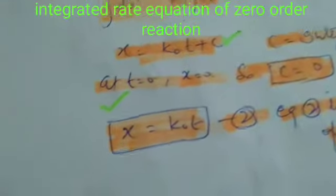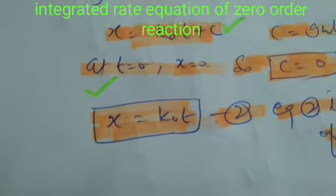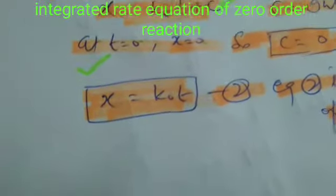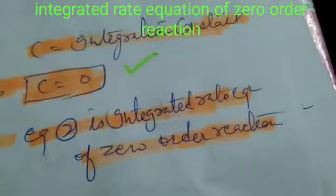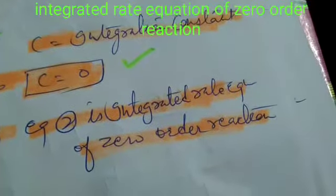Now the final equation we get is X equal to K0 T, equation 2. Equation 2 is called integrated rate equation of zero order reaction.